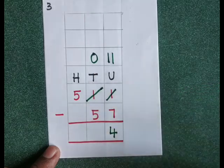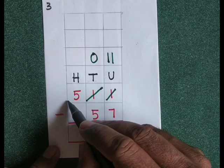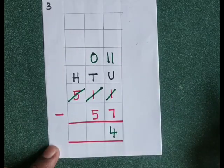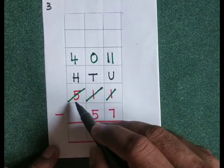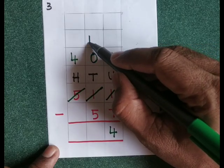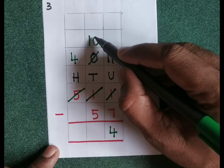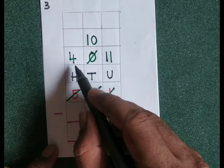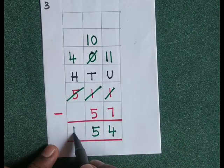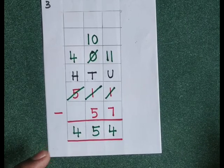Now 0 minus 5 — we can't do that because 0 is smaller than 5, so we have to borrow from the hundreds place. There are 5 hundreds; if you borrow 100 from 500, 400 will be left. That 100 means 10 tens, plus 0 tens gives us 10 tens. 10 minus 5 is 5. And here nothing, so 4 minus 0 is 4. The answer is 454.